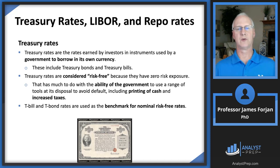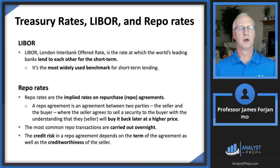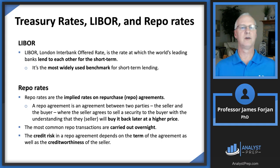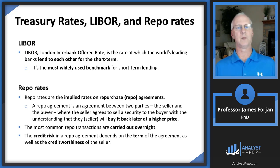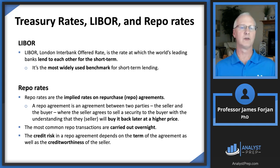Treasury yields are important for establishing benchmarks for nominal risk-free rates of interest. Other rates include the London Interbank Offered Rate (LIBOR), which is the rate between large financial institutions ranging over five currencies and many economies throughout the world. It's the rate at which these institutions lend each other over the short term — overnight is most common, though there's also weekly, one-month, two-month, three-month, six-month, and twelve-month LIBOR. It's the most widely used benchmark for short-term lending and is critically important for pricing swap contracts.